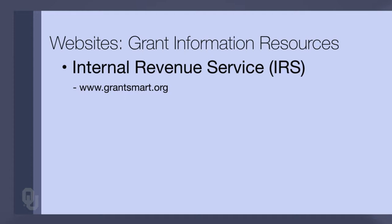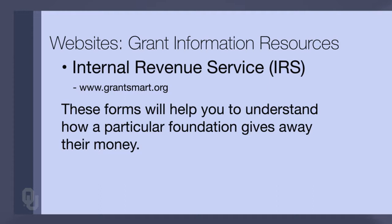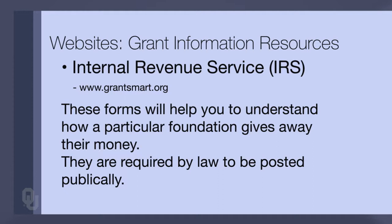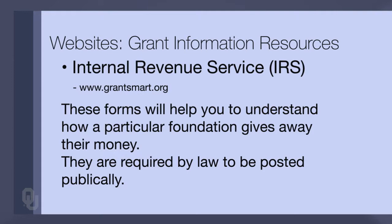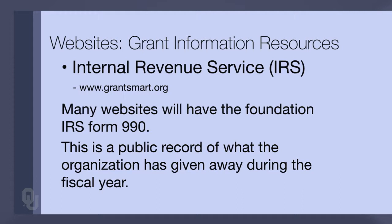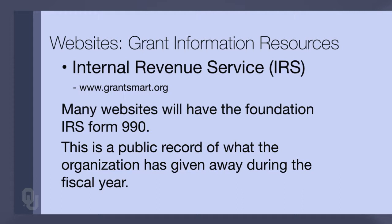There are also Internal Revenue Service forms that help you understand how a particular foundation gives away its money. They are required by law to be public documents and are posted on websites. One of the websites I've provided is grantsmart.org. There are several websites that have the Foundation IRS Form 990, which is a record of what a particular foundation has given away during a particular fiscal year.